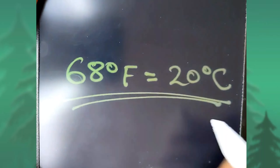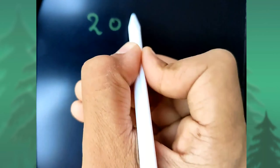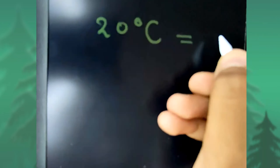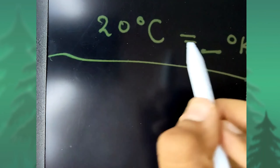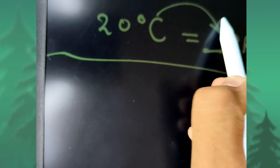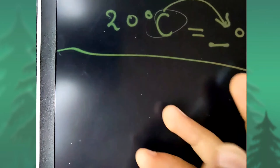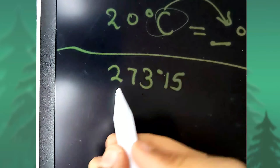Now we will see the formula to convert Celsius into Kelvin. We just got the answer 20 degree Celsius, so let's use 20 as our example. To convert Celsius into Kelvin, simply add 273.15. So: 20 degree Celsius + 273.15 = ? degree Kelvin.